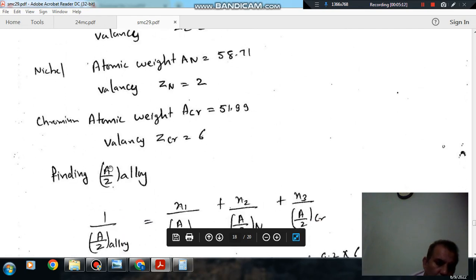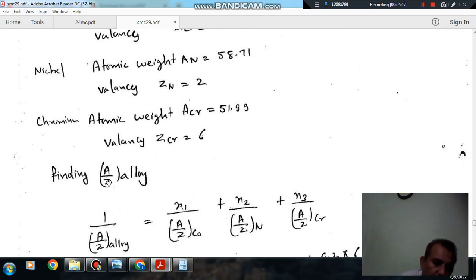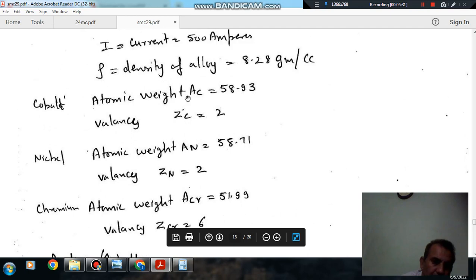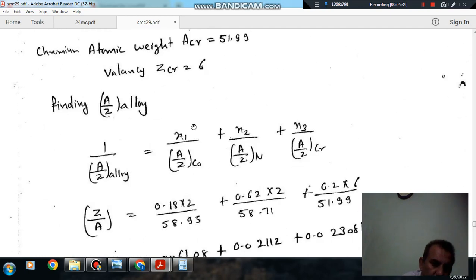So now for an alloy, we have to find out A by Z. For alloy, the A by Z can be found out by considering the fraction of material of which this alloy is made of. So percentage of atomic A by Z will be X1 by (A by Z) cobalt plus X2 by (A by Z) nickel plus X3 by (A by Z) chromium. So that is the formula considering the mass fraction of the constituent material and their A by Z values.